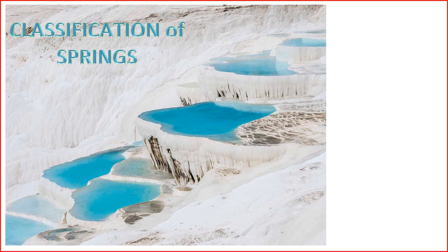9. Fault Springs — fault springs occur along fault lines, where fractures in the earth's crust allow groundwater to reach the surface. These springs are often associated with tectonic activity. 10. Cavern Springs — cavern springs emerge from underground caverns or caves. The water may flow directly from the cavern system to the surface, creating distinctive spring features. 11. Submarine Springs — submarine springs release freshwater into the sea or ocean. They can be found along coastlines and contribute to the mixing of freshwater and saltwater.